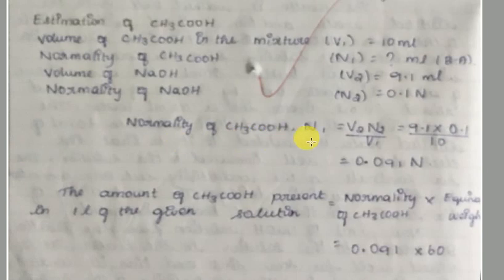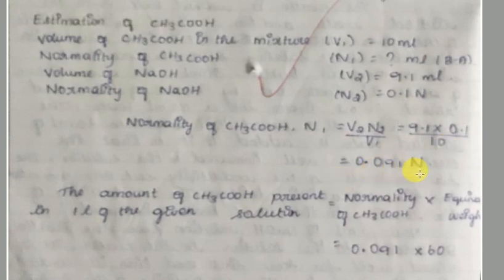For calculation: normality of acetic acid N1 = V2 × N2 / V1 = 9.1 × 0.1 / 10 = 0.091 N.